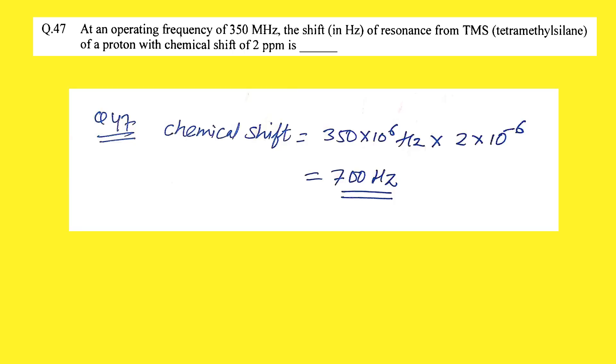For the NMR question: at an operating frequency of 350 MHz, the chemical shift is at 2 ppm. To find the frequency in Hz, convert 350 MHz to Hz and then multiply by the ppm value: 350 × 10^6 Hz × 2 × 10^-6 = 700 Hz. The correct answer is 700 Hz. If you have studied organic chemistry well, you can crack all these problems. I hope you liked the video — keep subscribing and thanks for watching.